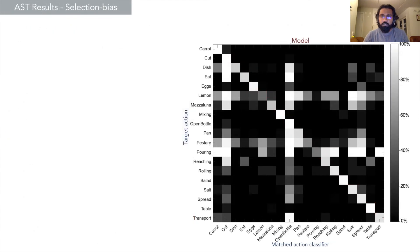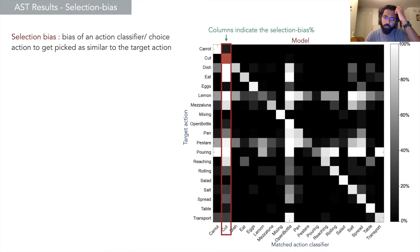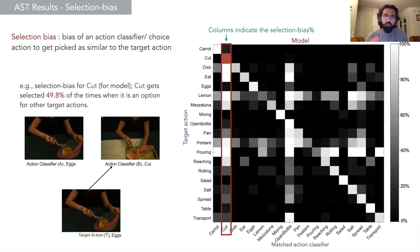The second measure we look into is selection bias—basically the bias of an action classifier or choice action to get picked as similar to the target. It's indicated by the columns and you have to subtract the accuracy value from it. If you look at cut action, cut gets selected 49% of the time when it's an option for other actions, so it gets confused with others.